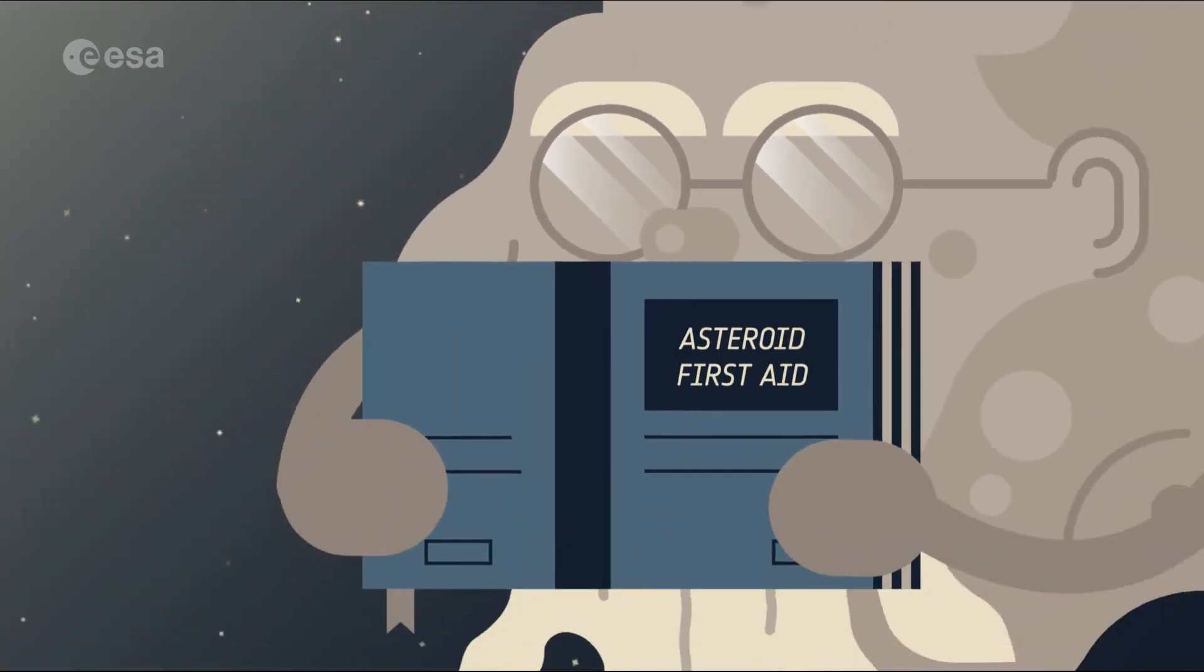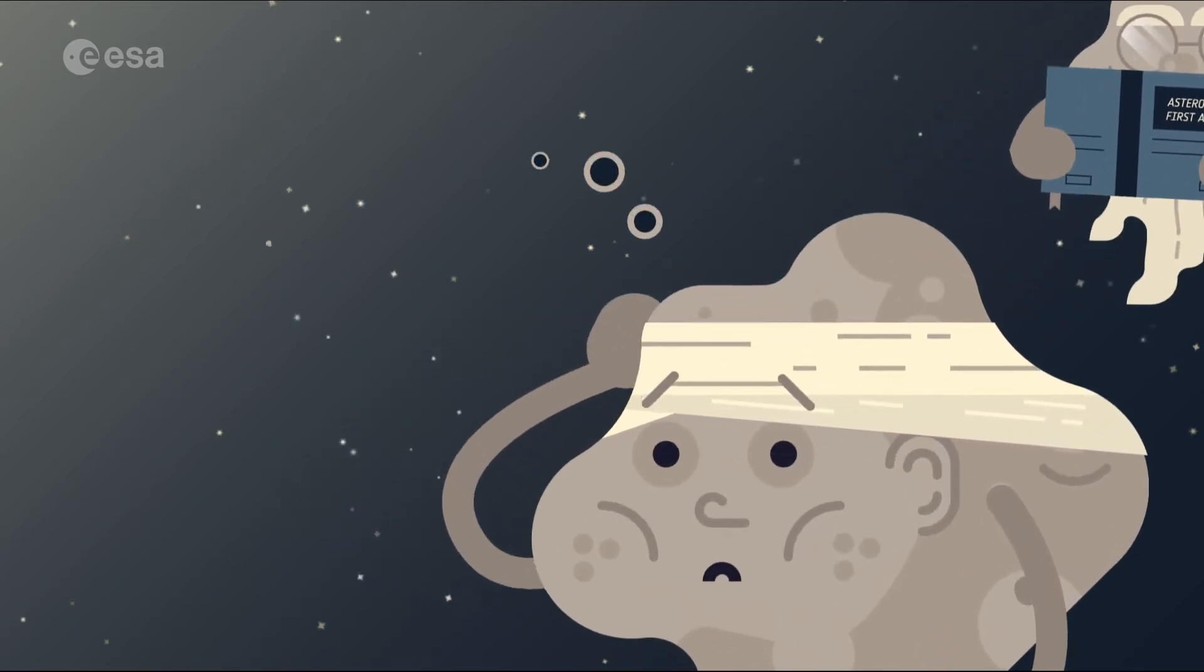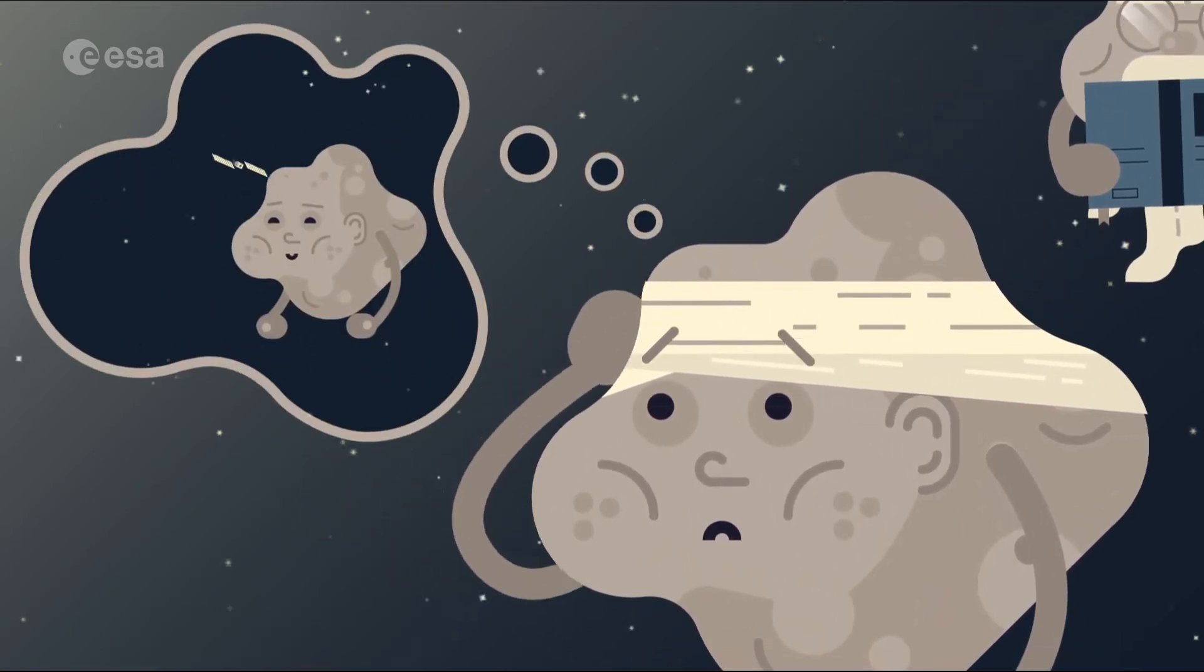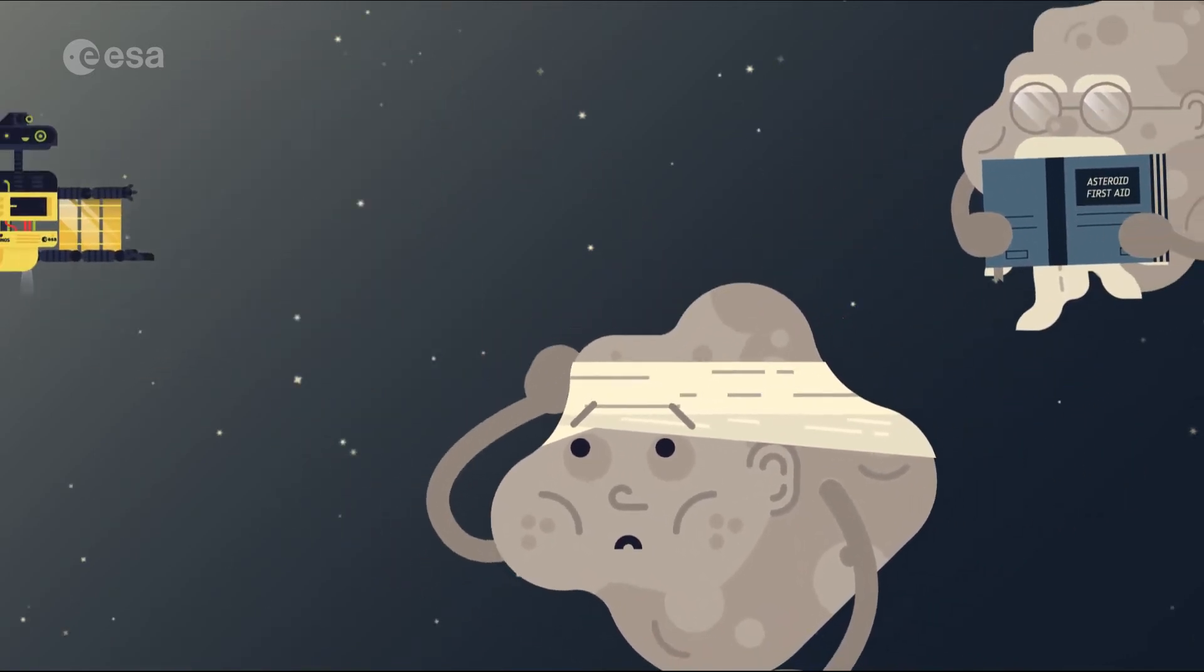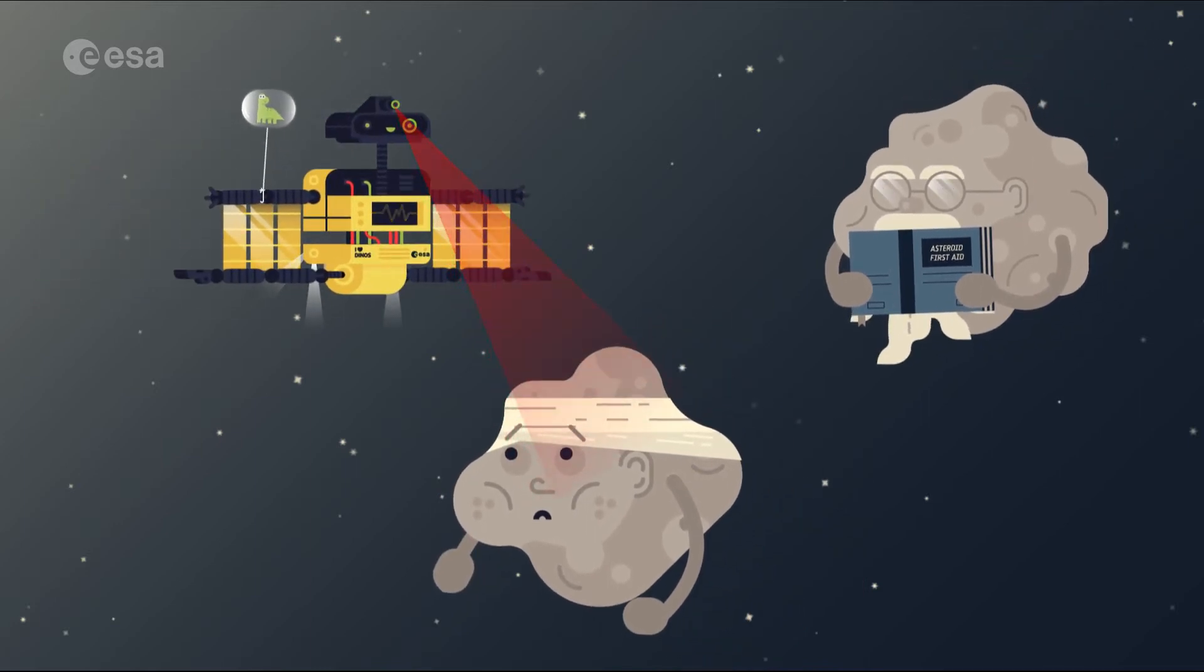When HERA reaches it, Dimorphos will already have been impacted by NASA's Double Asteroid Redirection Test, or DART for short. This cosmic shove is expected to slightly shift the orbit of the asteroid Moon.